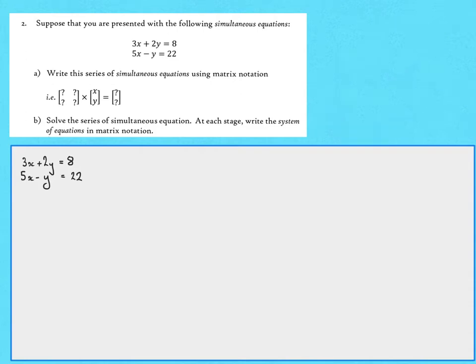In this question we're going to solve a simultaneous equation and see how this looks in matrix notation. Let's begin by representing our simultaneous equations in matrix notation, where we take a 2 by 2 matrix and multiply it by the unknowns x and y as a matrix to give us our outcomes 8 and 22. The key question is: what matrix do we need to multiply the matrix [x, y] by to give 8 and 22?